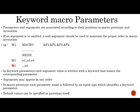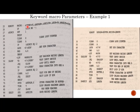In another invocation of M1, only one argument X4 is provided, corresponding to parameter P4. In keyword parameters, each argument value is written with the keyword naming the corresponding parameter, so arguments may appear in any order. In the macro prototype, each parameter name is followed by an equal sign identifying it as a keyword parameter. Default values can also be specified in the prototype itself.